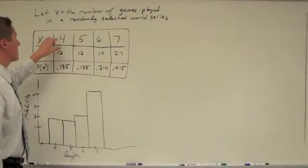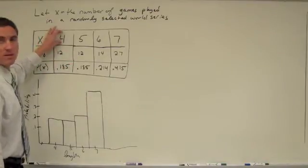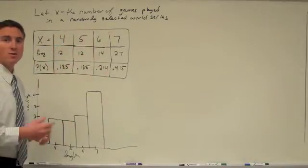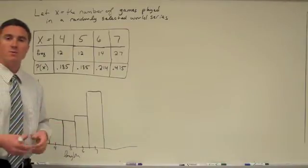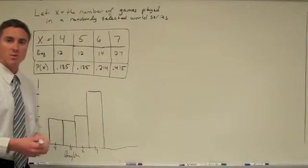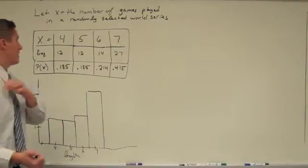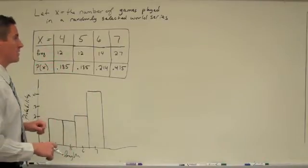So now we're looking at, instead of looking at the probability of each event, we're saying, okay, what's probability that it takes four games, probably takes five games, probably takes six games. We can see the probabilities that match up. So the first thing that we want to do is we want to try to find the mean of this, or what we call the expected values. How many innings would we expect a World Series game to go? Well, you guys all know how to do the mean. Add up all these values and divide by the total. So let's go ahead and take a look at that.